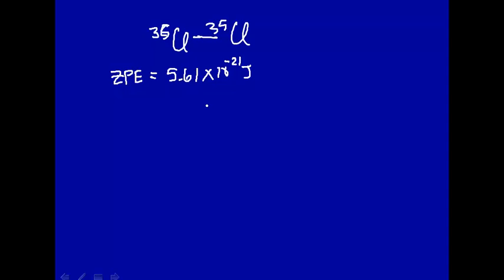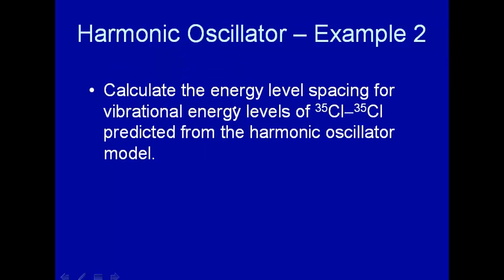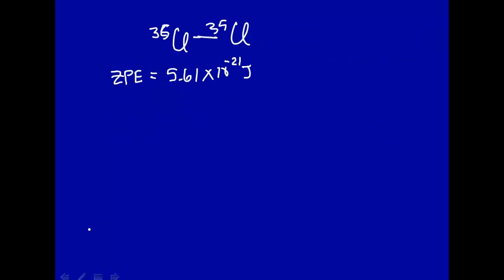Now we're asked to calculate the energy level spacing for this. So recall that for say n equals 0 we have an energy level which is equal to 1 half h bar omega. And that's the zero point energy.